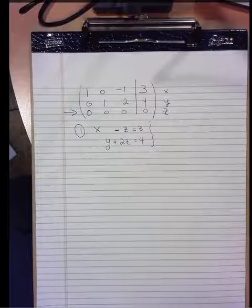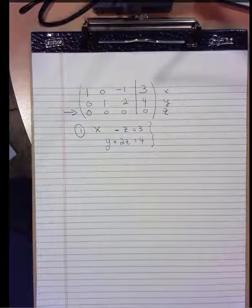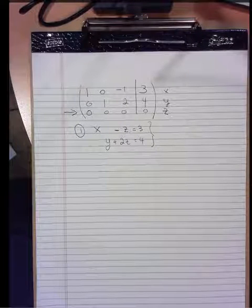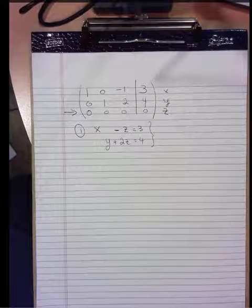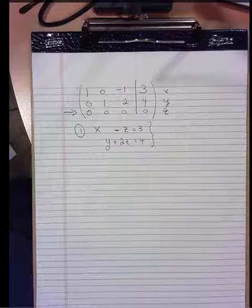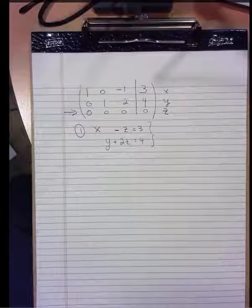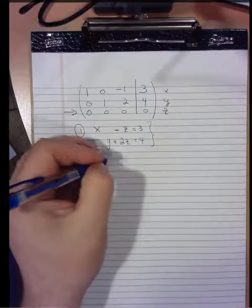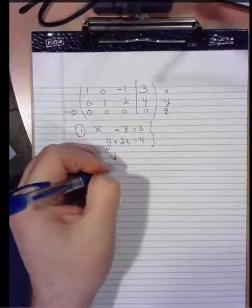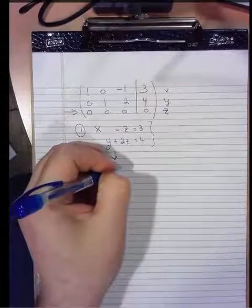This is the reduced form of the system of equations. So we don't have enough information to say anything about unique values for x, y, and z. But we do have relationships to say, aha, if we could pick a value for z, then x and y would surely be determined, right? Because if we solve these in terms of z,